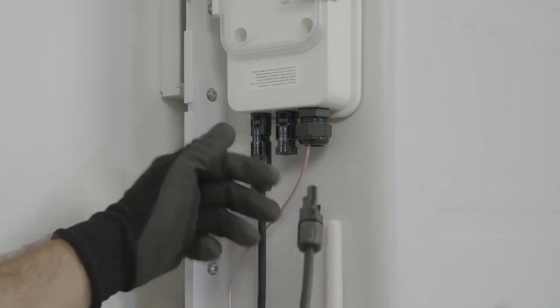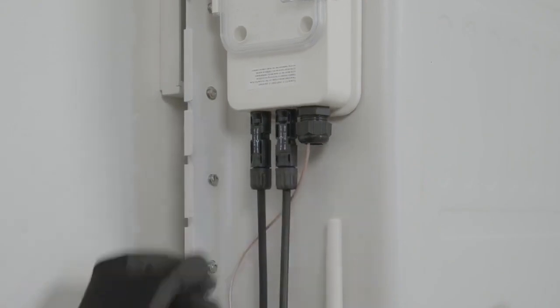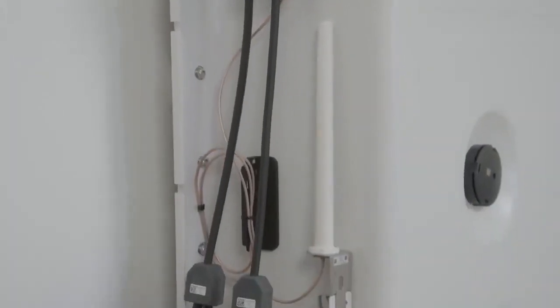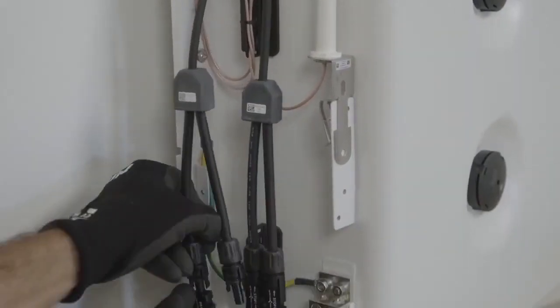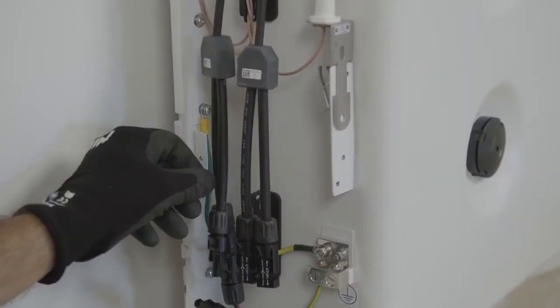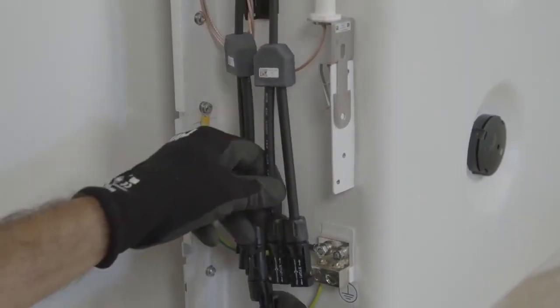If two SolarEdge home batteries are going to be connected in parallel, you'll need to use the SolarEdge Y branch connector. Simply plug those in to each of the associated DC connections, one from the additional battery and the second going back to the inverter.